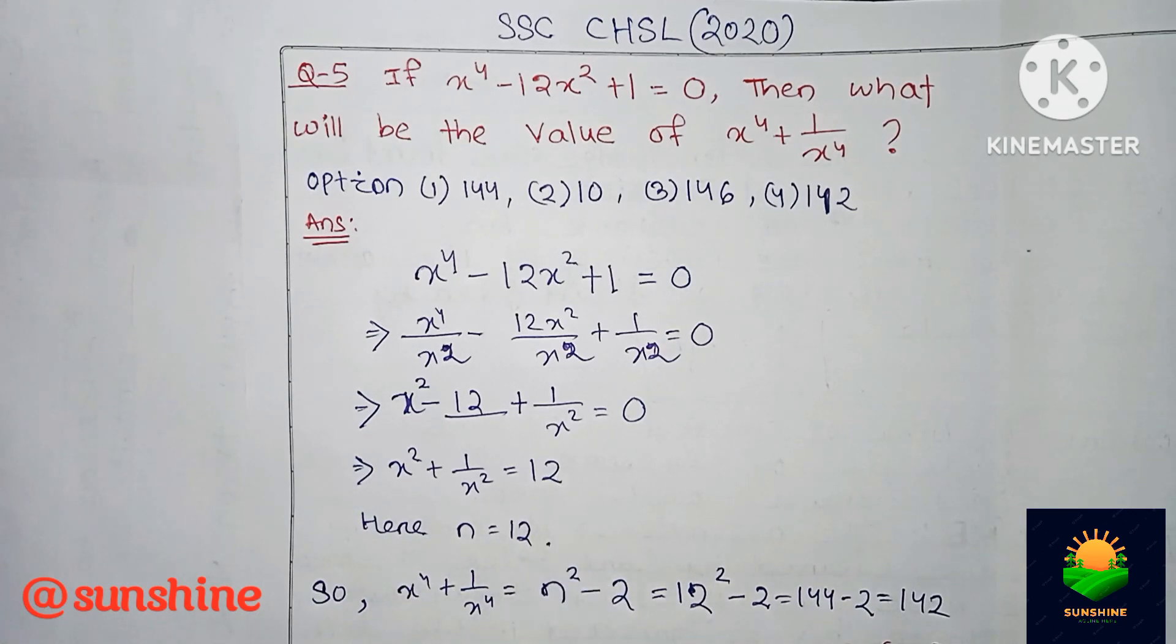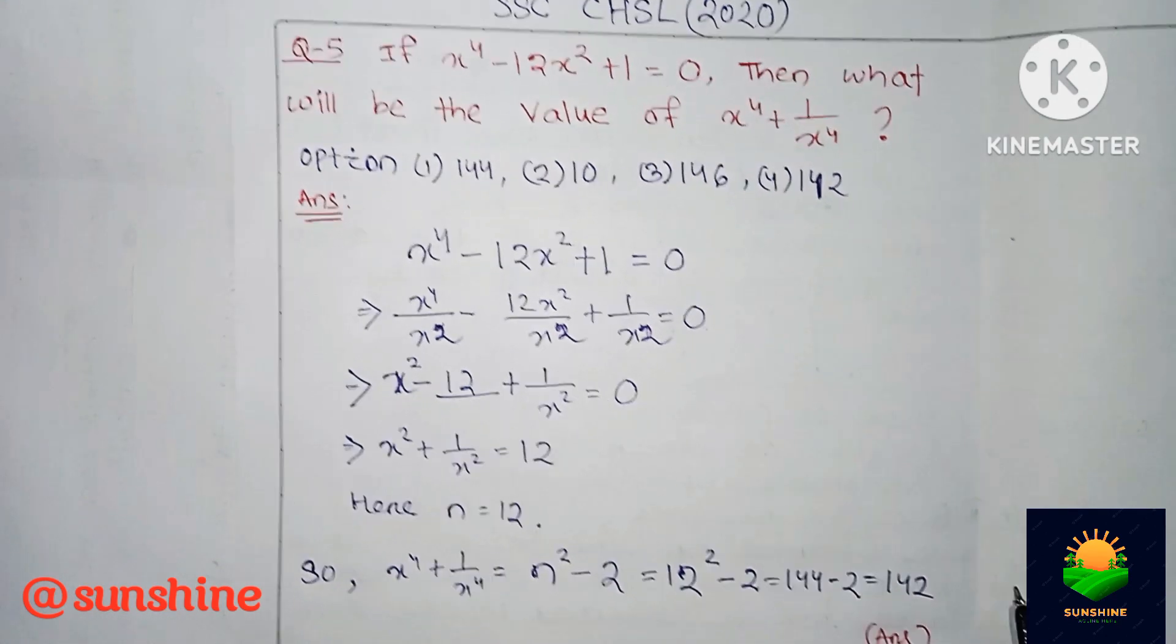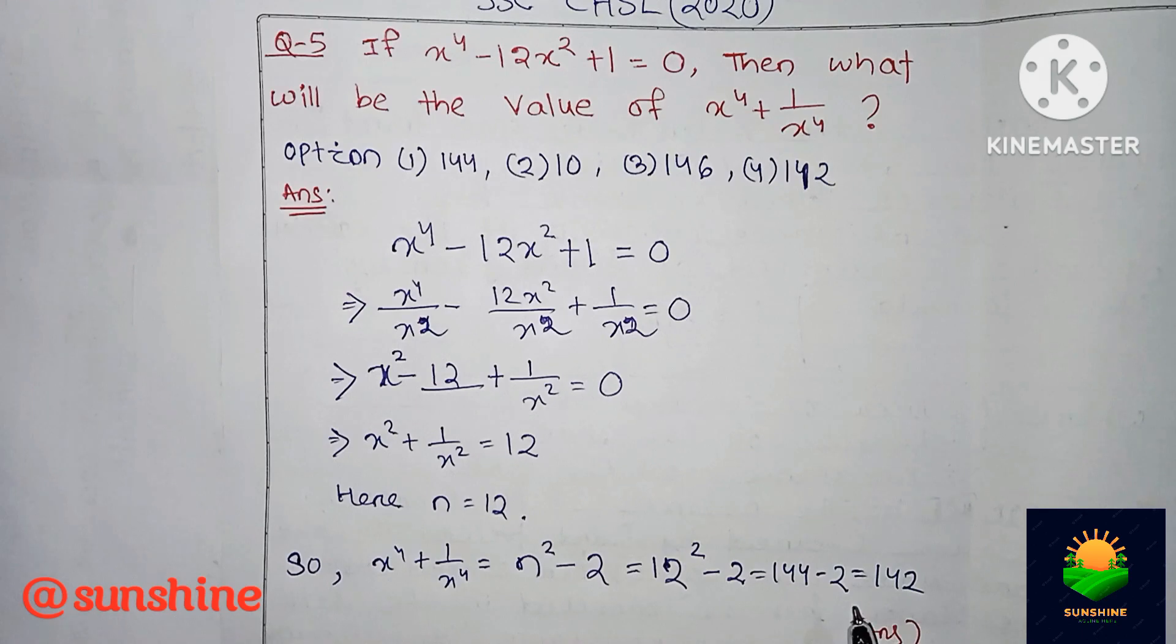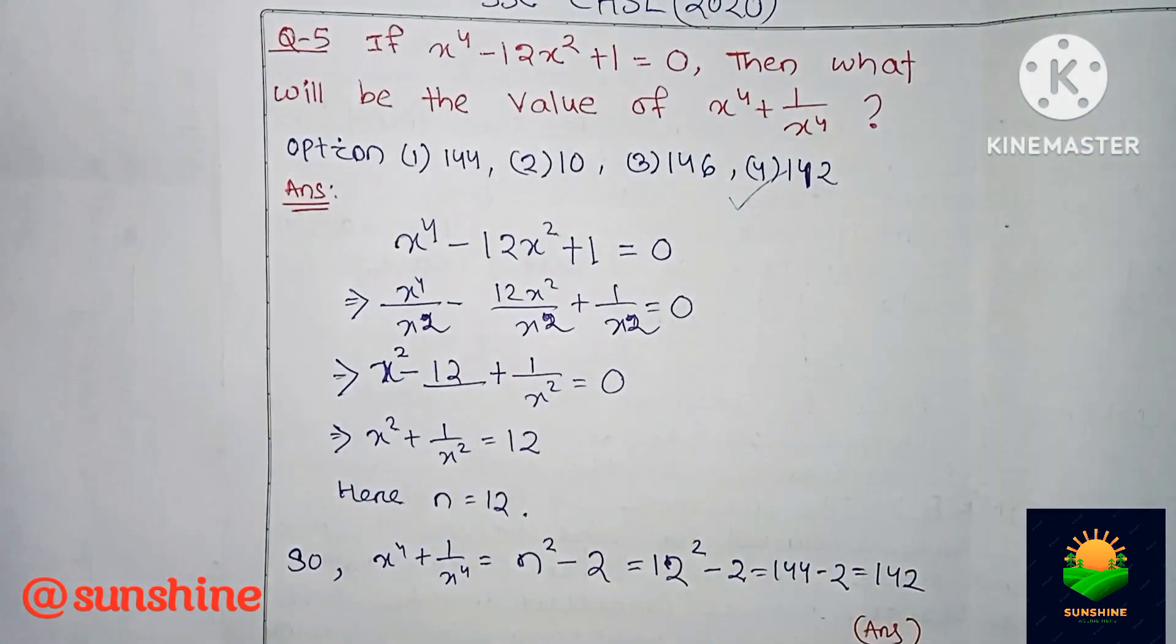Using the formula we know, x to the fourth plus 1 by x to the fourth value is n square minus 2. So 12 square minus 2 equal to 144 minus 2 equal to 142. This is the right answer, so option number 4 is correct.